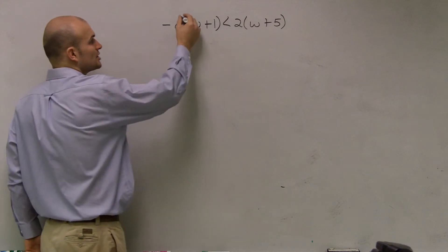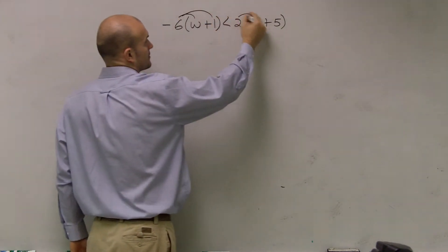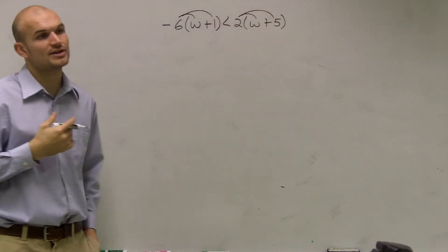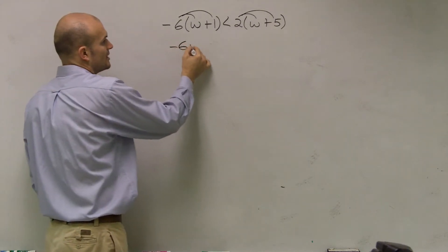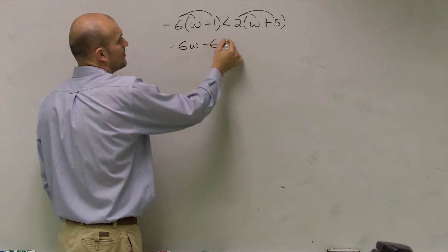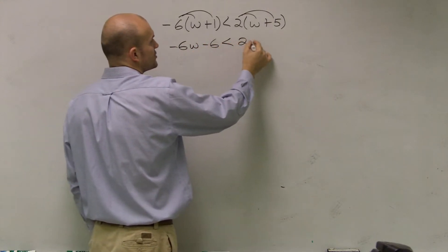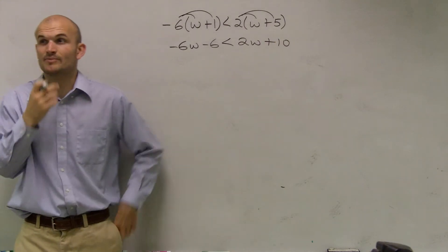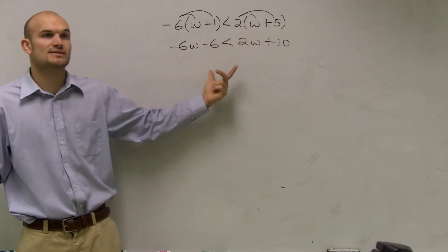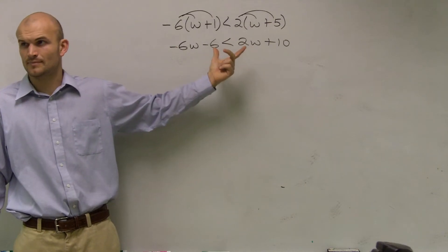Everybody should have been able to simplify our inequality first for this. Because this doesn't really have anything to do with our inequality yet. All we need to make sure we can do is simplify our inequality. So now what I did by using the distributive property, I got rid of my parentheses. Does everybody see what I did?